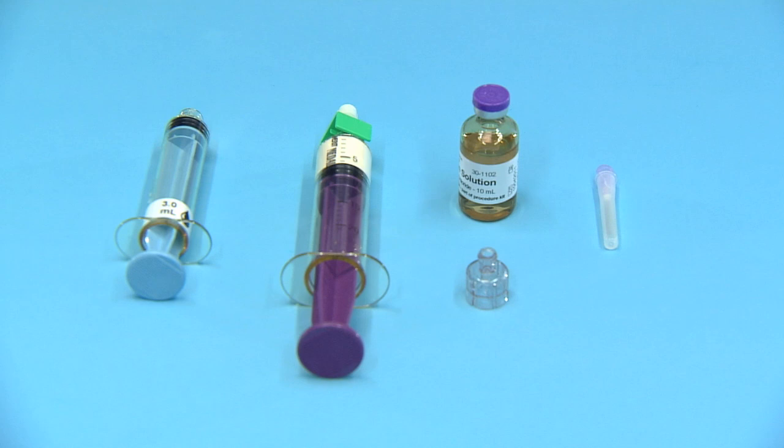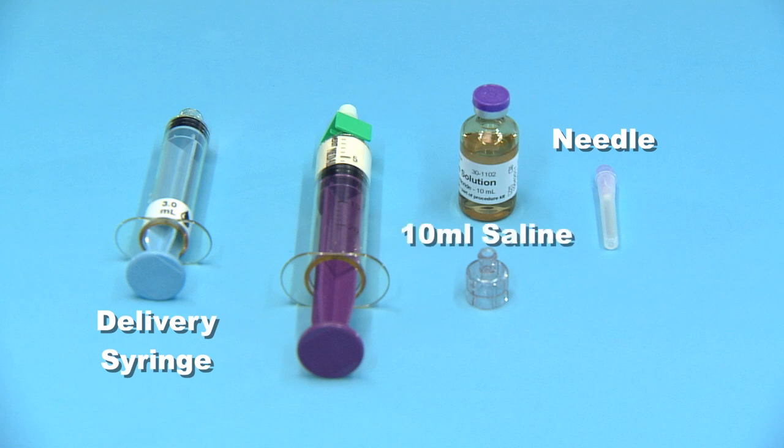The Beta-BSM kit contains the following: one delivery syringe, one needle, one 10-milliliter vial of saline, and one syringe containing Beta-BSM powder.